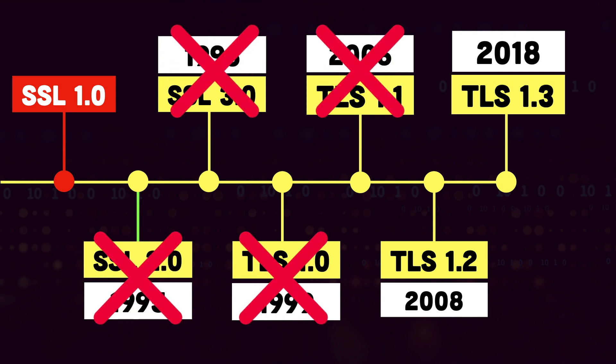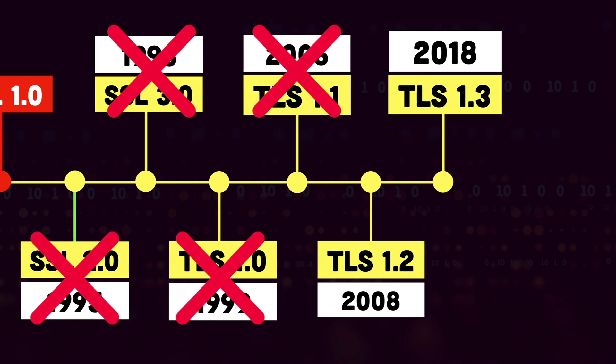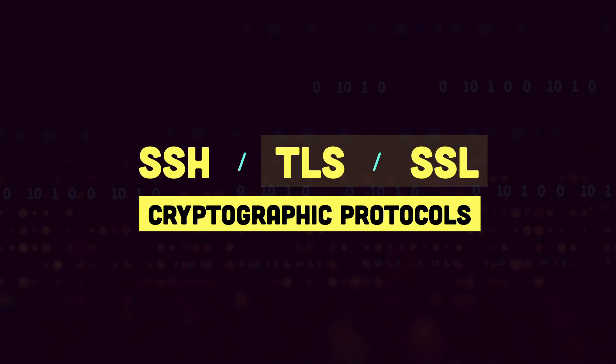Everything before TLS 1.2 has been deprecated, mainly because of security flaws. So TLS and SSL are the protocols used to secure the data sent over the network. TLS is the current version of this protocol, and SSL was the older name of the same protocol.